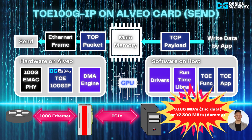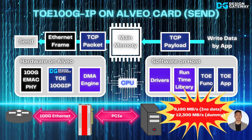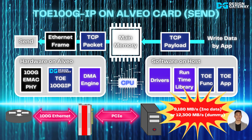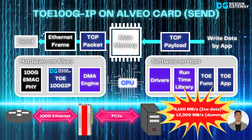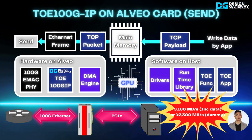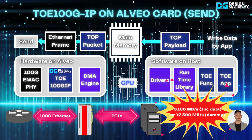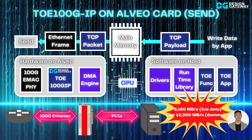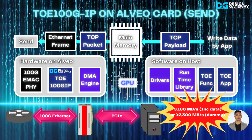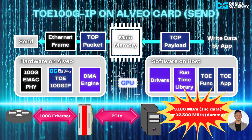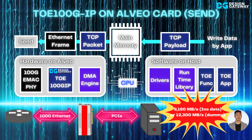The performance result when the test application writes incremental data is up to 9,180 MB per second. Without the task to generate incremental data — using dummy data instead — peak performance on 100G Ethernet at 12,300 MB per second can be achieved.